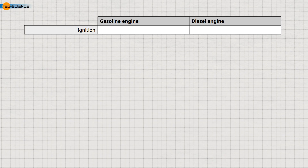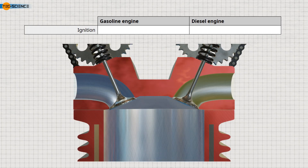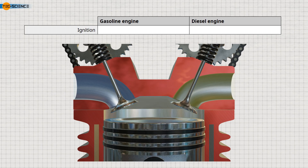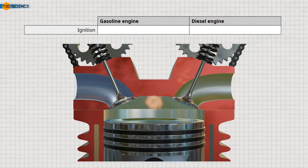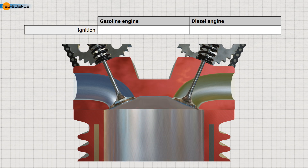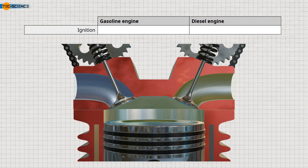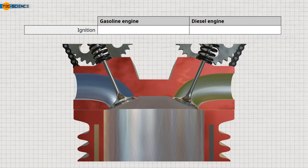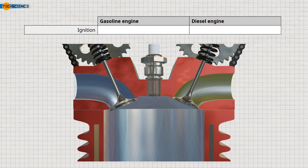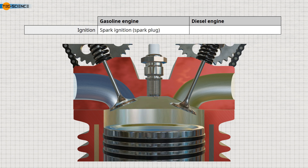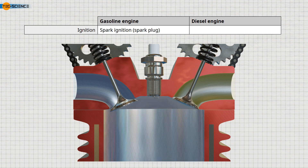However, the basic operating cycles — intake, compression, power, and exhaust — remain unchanged. The main difference is in the ignition and combustion process of the fuel-air mixture. In gasoline engines, ignition is initiated by a spark from a spark plug, also known as spark ignition.